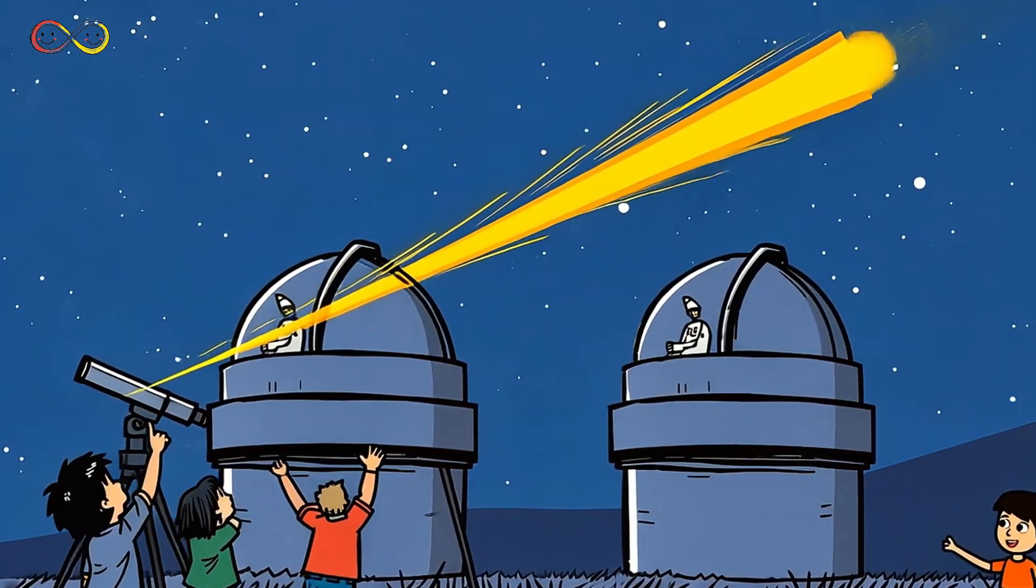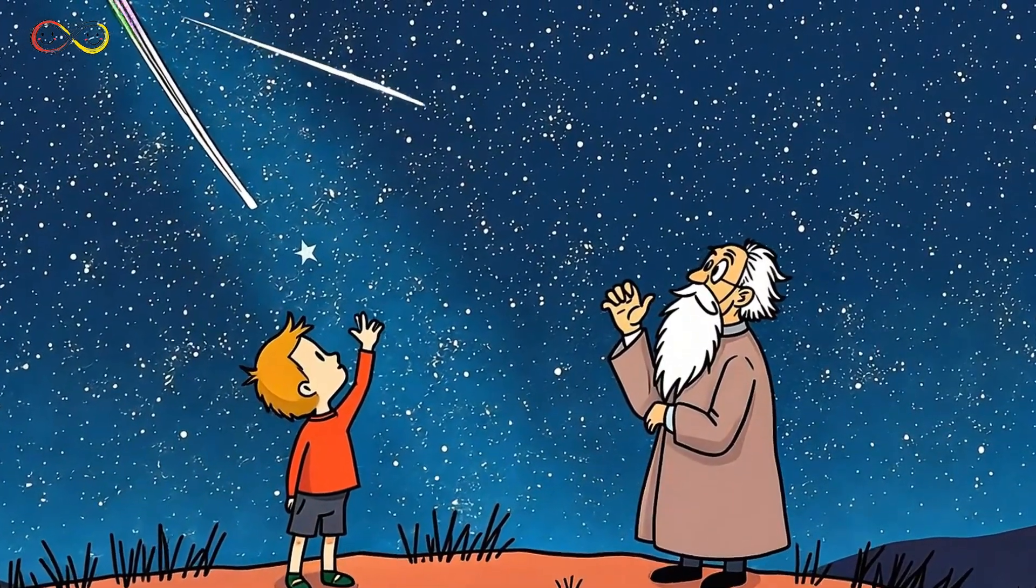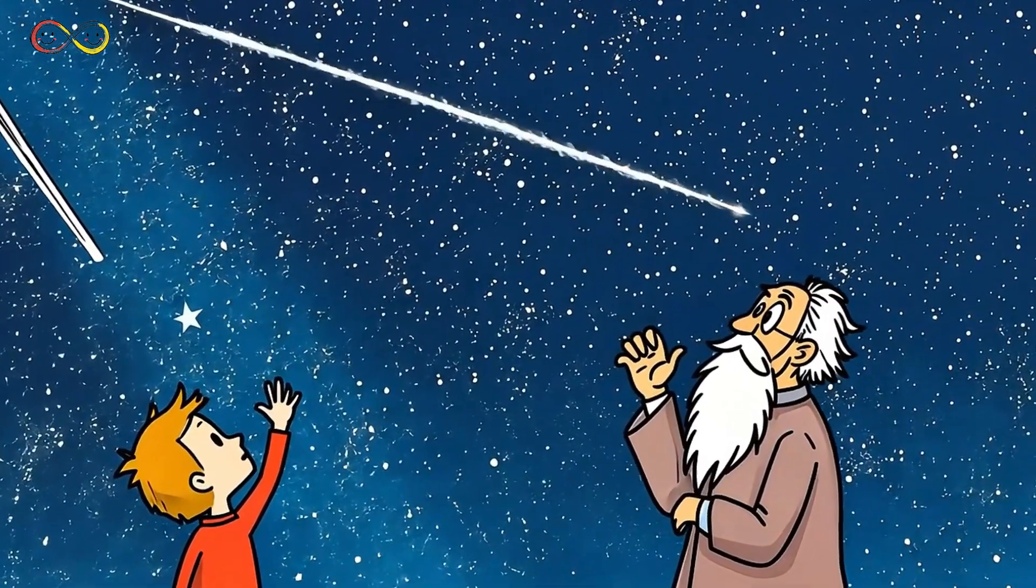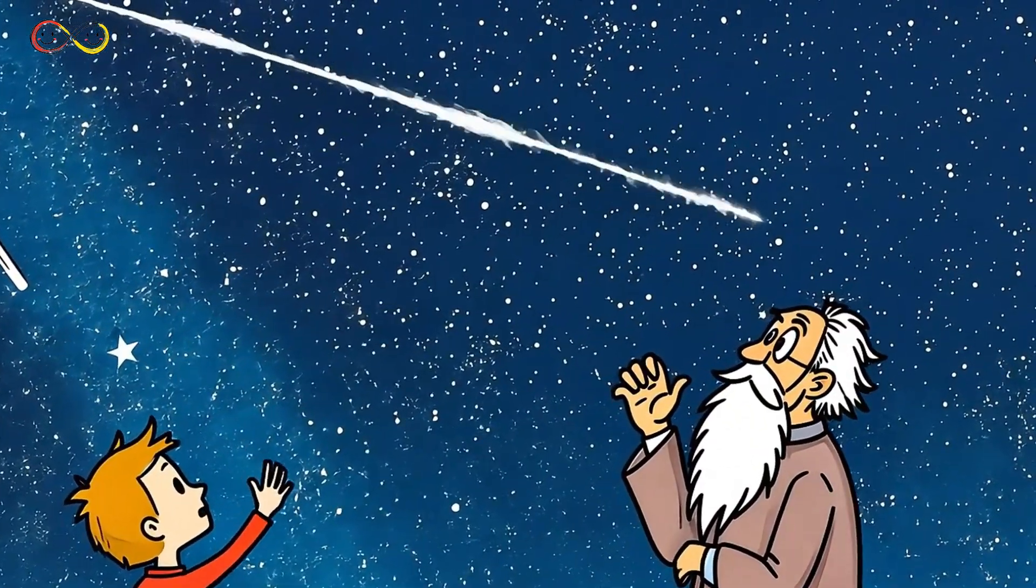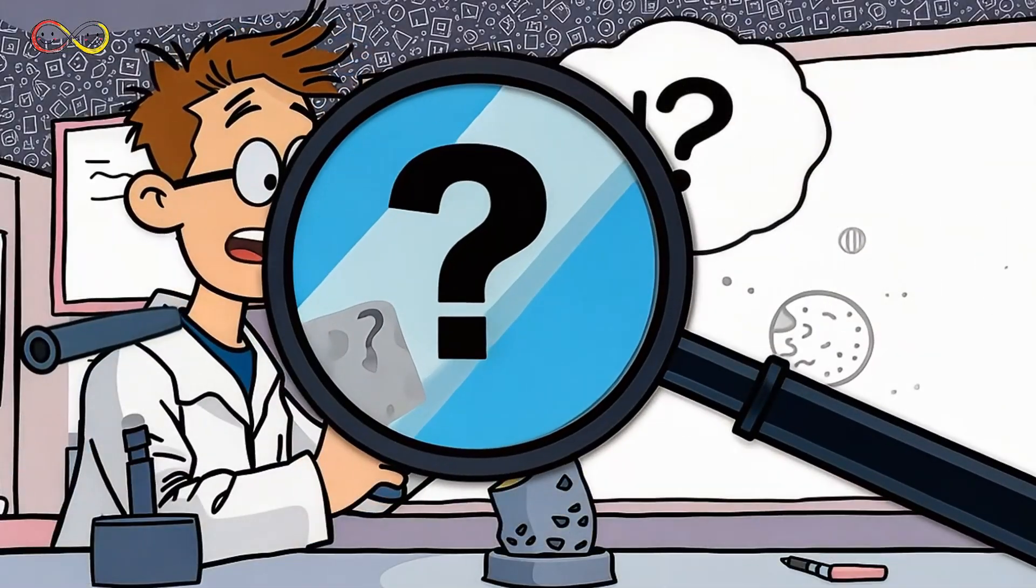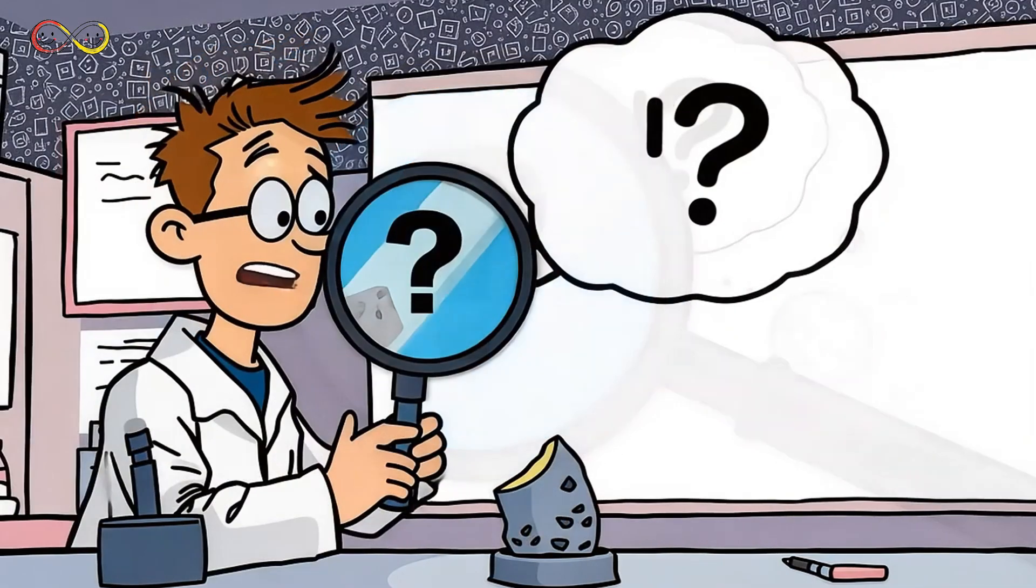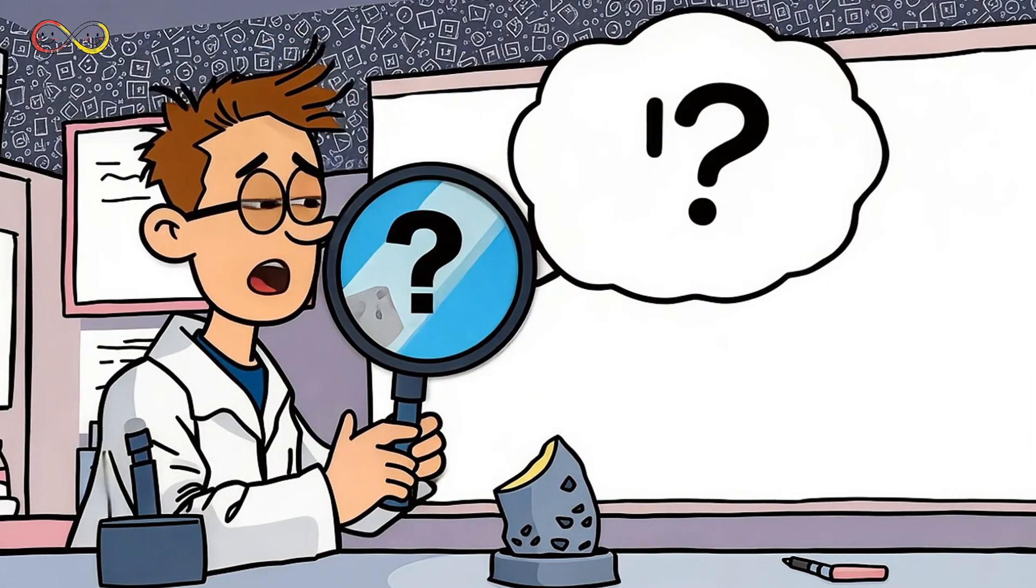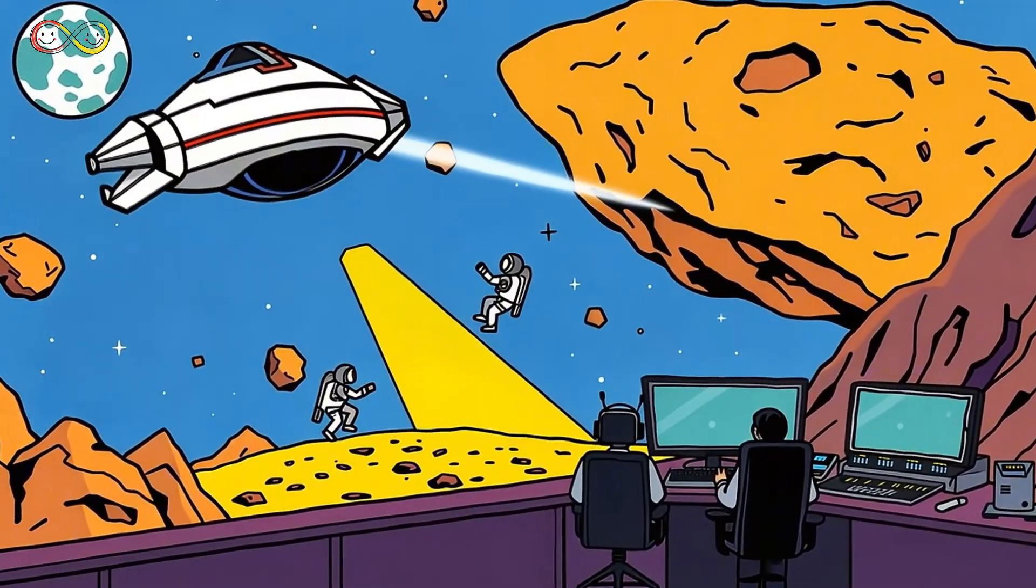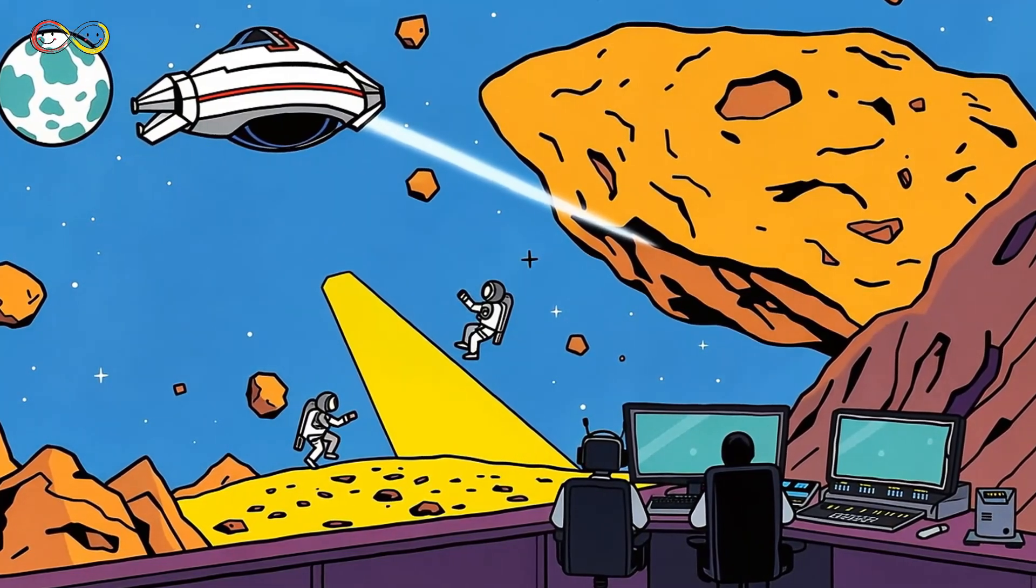For centuries, humans have gazed at the night sky, wondering about the mysteries of space. What else is out there waiting to be discovered? Scientists study asteroids and planets to learn how our solar system formed. Each discovery helps us understand our past, and maybe even our future. With powerful telescopes and space probes, we keep uncovering new celestial bodies. One day, we might even visit an asteroid up close.